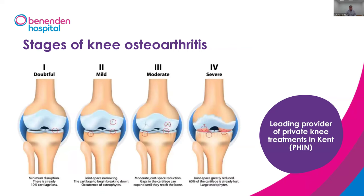Osteoarthritis goes through a number of stages, seen on x-rays and MRI scans. It starts with early cartilage thinning — the x-ray may look normal but an MRI scan may show early cartilage loss. Then mild arthritis shows joint narrowing on x-ray. This progresses, the joint space gets narrower until all the cartilage is worn away, ending with bone-on-bone arthritis. This is often accompanied by severe pain and limitation of activities, and is usually obvious on x-ray without further imaging.